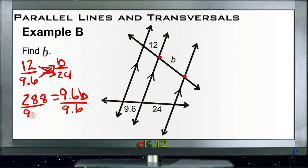And then we just divide both sides by 9.6, get rid of that 9.6 there with the b. 288 divided by 9.6 is 30, 30 even equals b. So that means this segment right here must be 30 units.